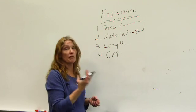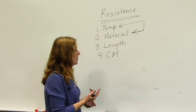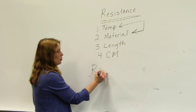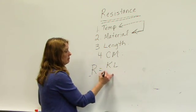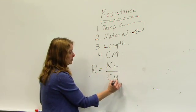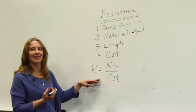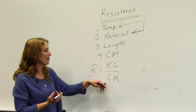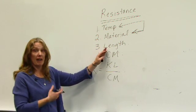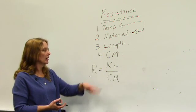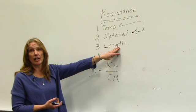There is a formula for the resistance of a conductor. That formula states that R is equal to KL over CM. All right, so we have our formula: R equals KL over CM. If I look, we obviously see our CM, our circular mill area of the wire. L obviously stands for length.